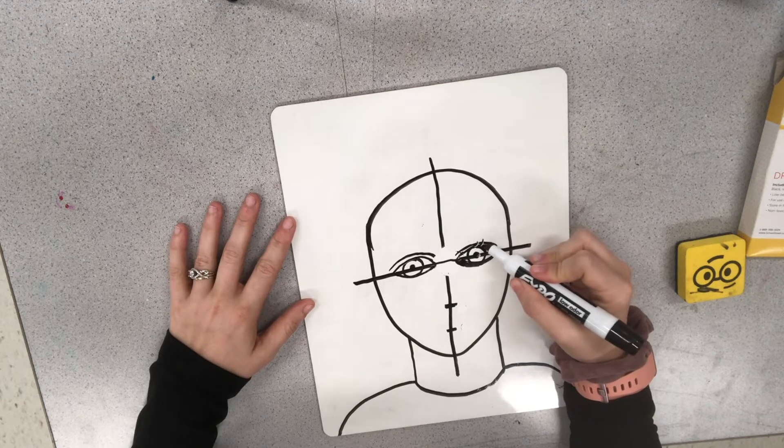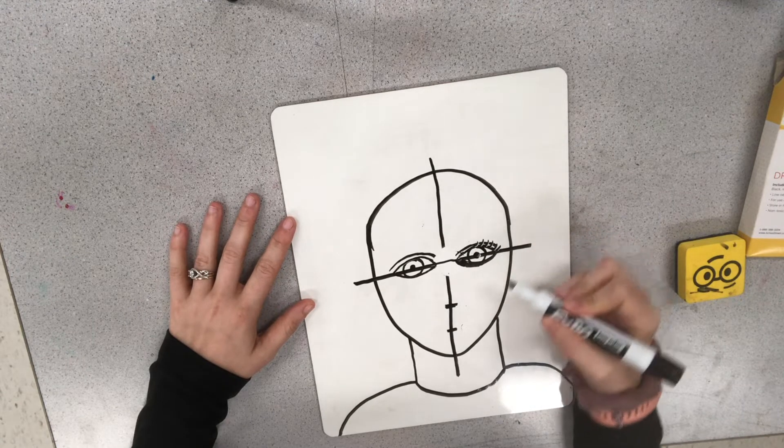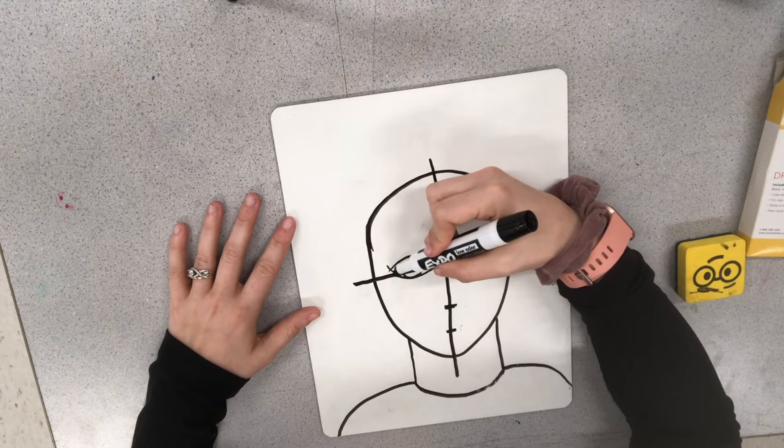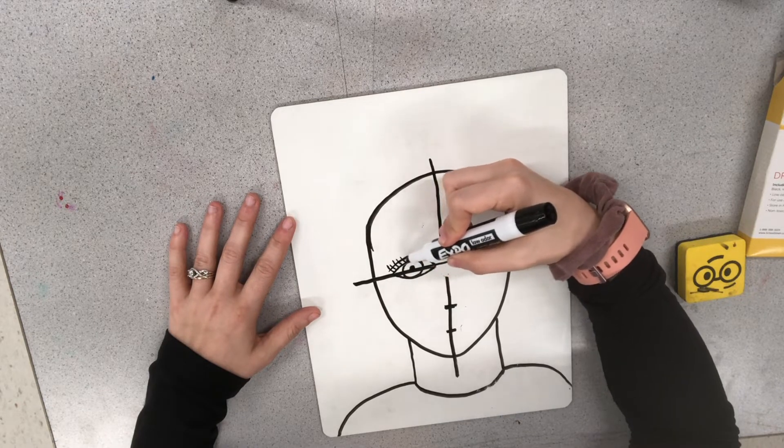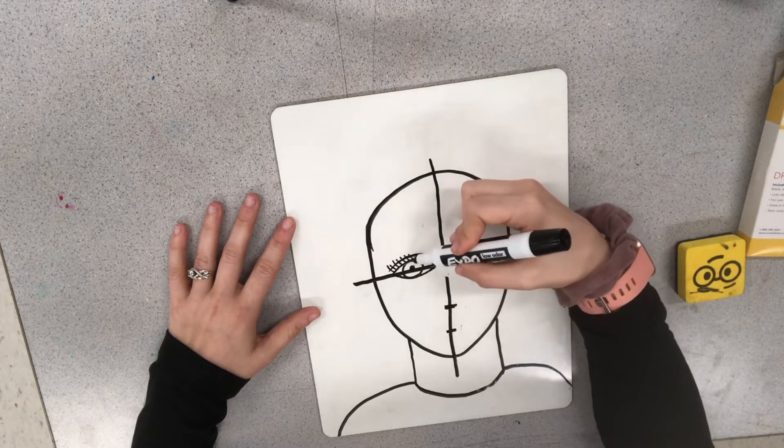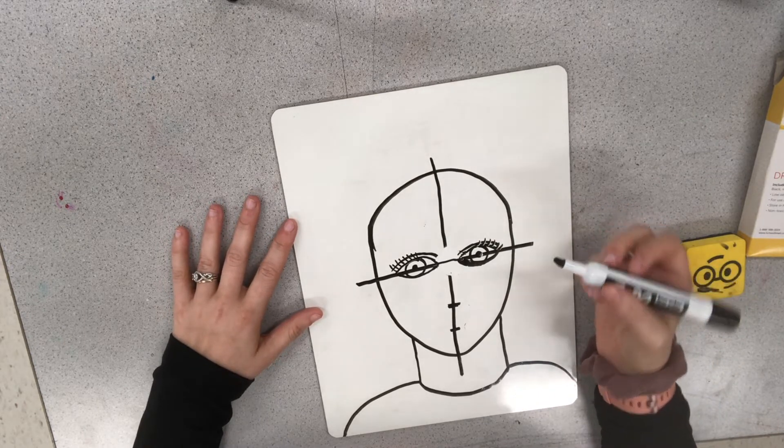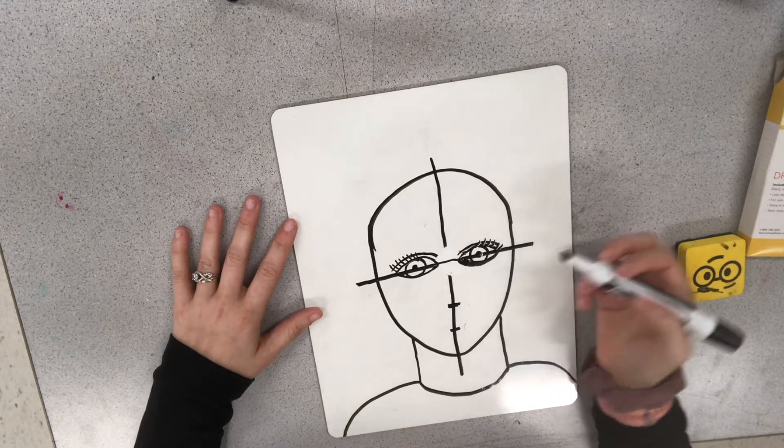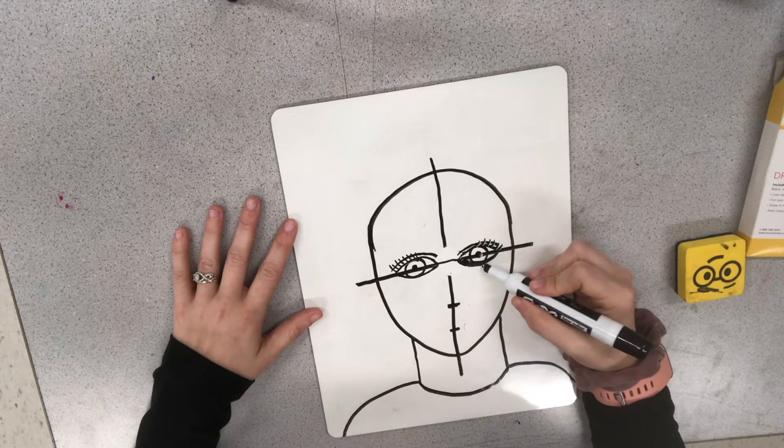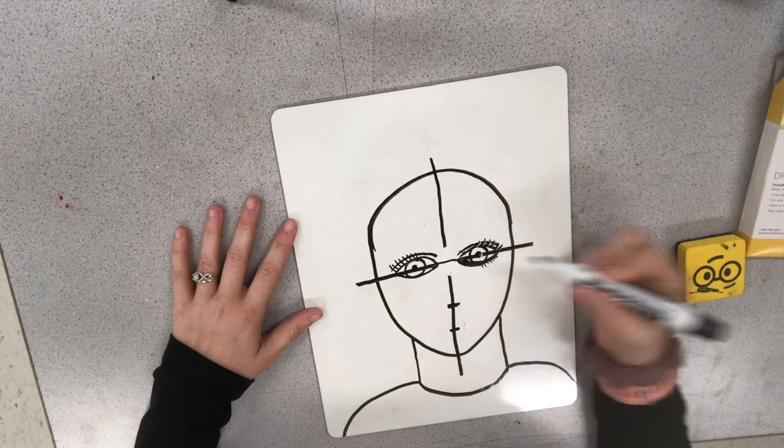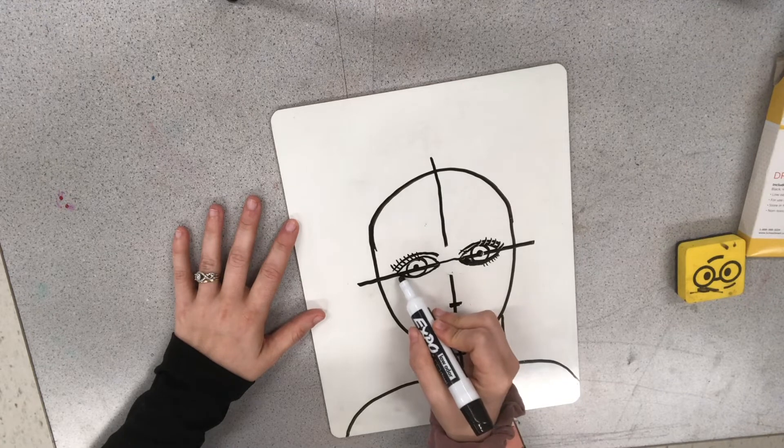Now everybody has eyelashes, boys and girls. They have an important function on our face. They help keep the dirt, sand, dust out of our eyes, keep them clean. There are not only lashes on the top, there's also some on the bottom and they're a little bit shorter than the ones on the top. So you can add those in.